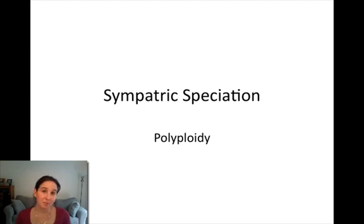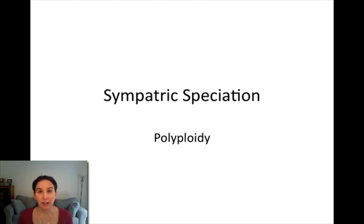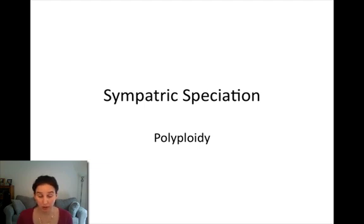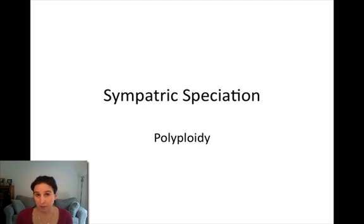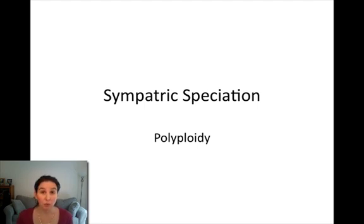Hi again everybody. This is my last 10-minute video. In the last video we talked about sympatric speciation and how it can occur via disruptive selection in populations of organisms. That process — using the example of the soapberry beetle — happens quite slowly, but there is a way sympatric speciation can happen really quickly, and that's through a process called polyploidy.